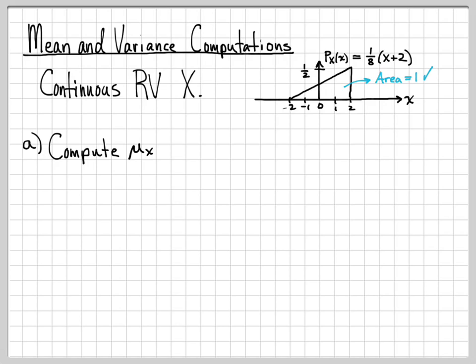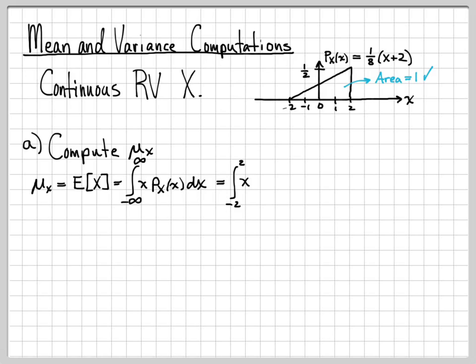We want to compute a few things. First, we want to compute the mean of the random variable x, denoted mu sub x, which can also be written as the expected value of x. When we compute the expected value of a quantity, we take that quantity, multiply it by its probability density function, and integrate over minus infinity to infinity. In this case, we integrate from minus two to two, since the PDF is zero elsewhere, multiplying x by the PDF equation.